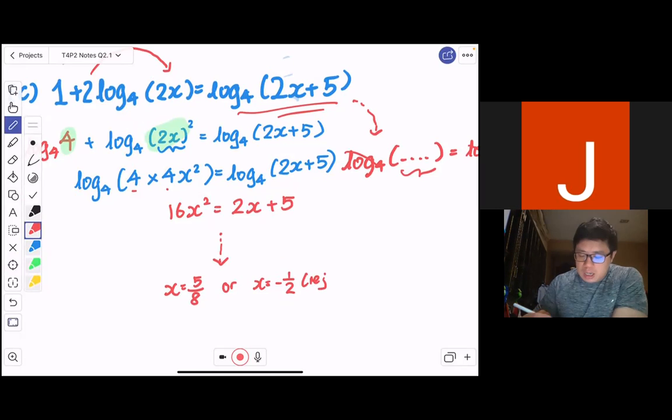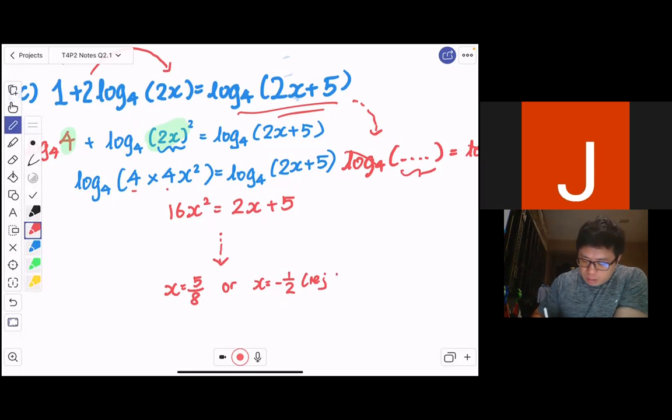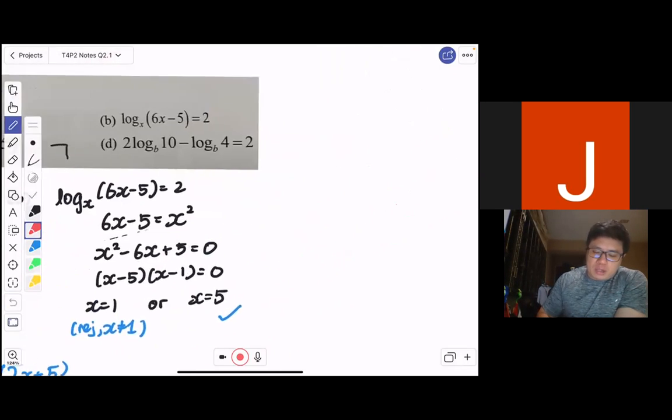And because x, if it's negative, it's not going to be well defined in this logarithmic function here. So we reject because 2x has to be positive. So this is for part (c). Next, I will go on to part (d). I'll just write it at the side here.